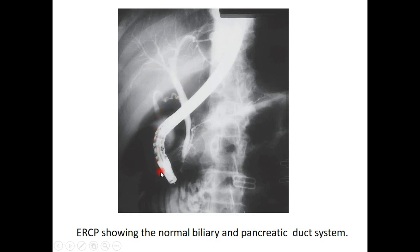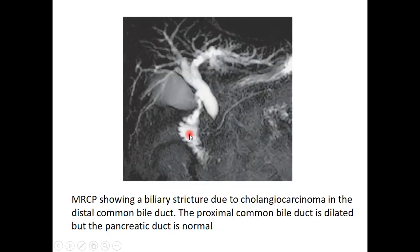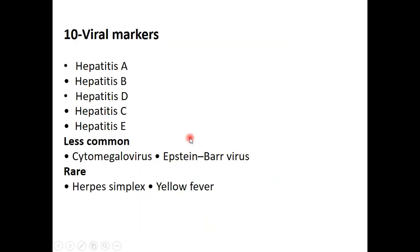This is ERCP — endoscopic retrograde cholangiopancreatography — where the endoscope reaches the second part of the duodenum, goes to the ampulla of Vater, and cannulation is performed. You can inject a dye showing the common bile duct, which here is very normal. This is the pancreatic duct, very normal. These are the biliary passages — the common hepatic duct, the left and right hepatic ducts. This is MRCP showing a biliary stricture with dilatation of the common bile duct and intrahepatic biliary passages, with a possible cholangiocarcinoma at the distal common bile duct. The pancreatic duct appears unaffected and normal.